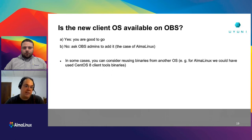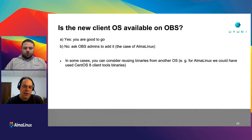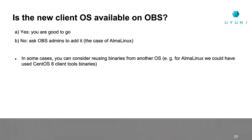Is the new client OS known already by Salt, or do you need to enable it in Salt? First: is the new client OS in OBS? If yes, you're lucky and good to go. If not — and that was the case with AlmaLinux — you just need to ask the OBS admins to add it, which took just a few days. We could have reused binaries from another OS like CentOS, but since CentOS 8 is dying, we're building new binaries based on AlmaLinux as the base for all RHEL clones in Uyuni going forward.